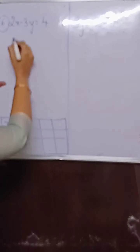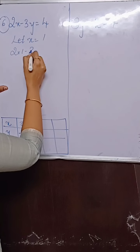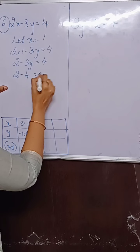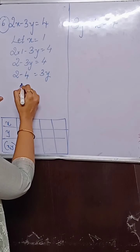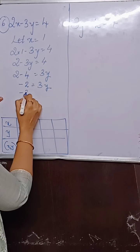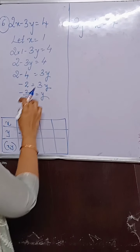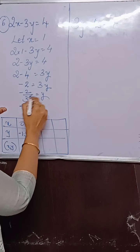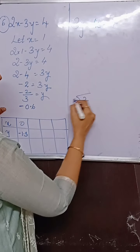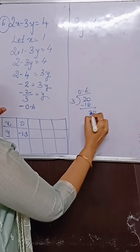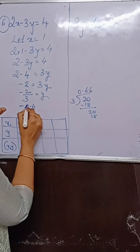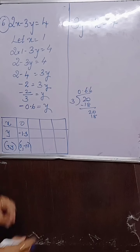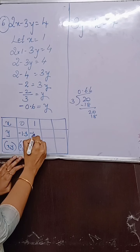Next, let x be 1. So 2 into 1 minus 3y equals 4, giving 2 minus 3y equals 4, so 2 minus 4 equals 3y, meaning minus 2 equals 3y. Therefore y equals minus 2 upon 3, which is approximately minus 0.6. First ordered pair: 0 comma minus 1.3. Second ordered pair: 1 comma minus 0.6.